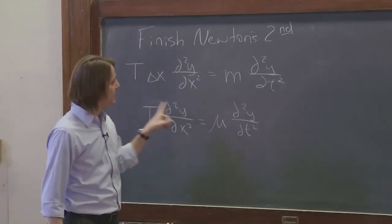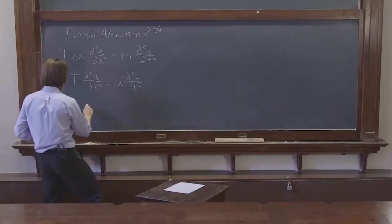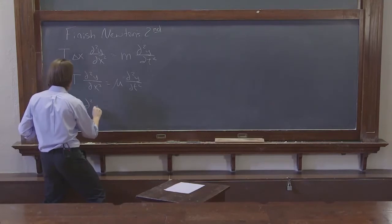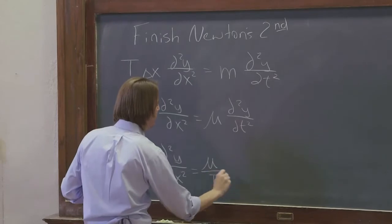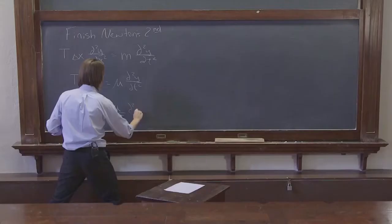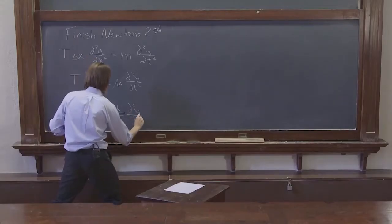And now the next thing would be to bring the T, the tension under the mass density, and we get d²y/dx² equals mu over T d²y/dt².